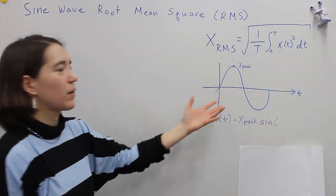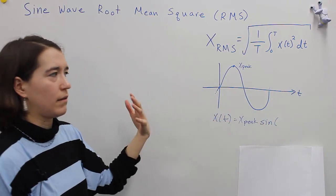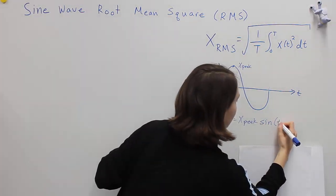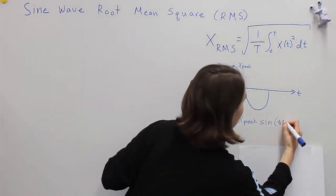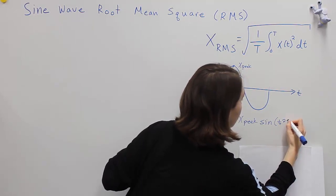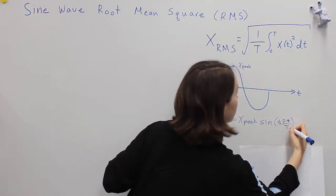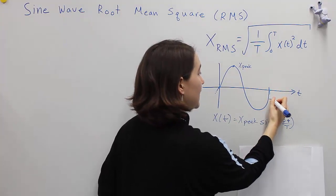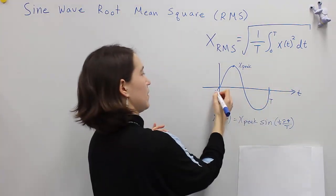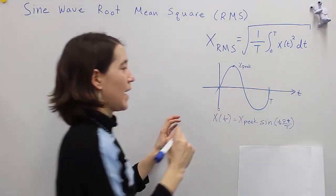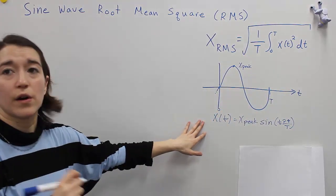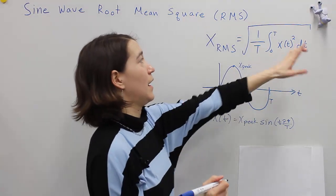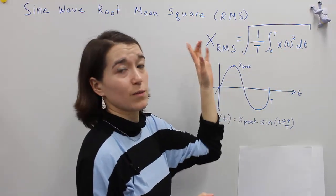So it's going to be xpeak multiplied by the sine wave. Here we're working with time rather than angle, so we would have t times 2π over the period T. So the period 2π is T, and of course this point is zero. This is our equation that we're going to work with, and now we have to put that in and evaluate this expression.